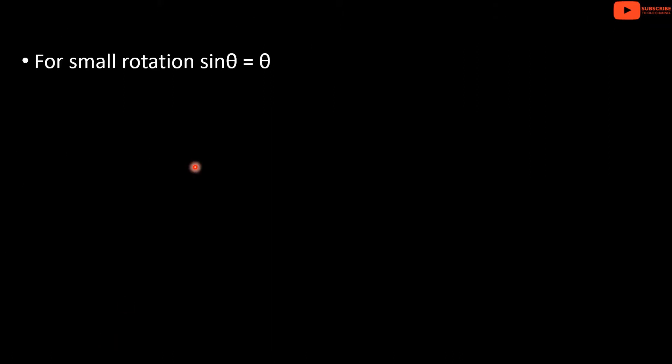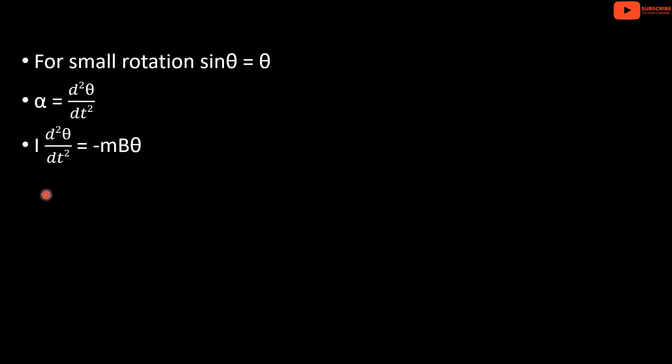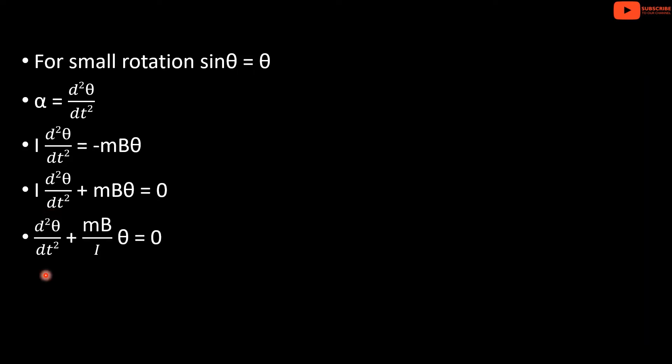For small rotation, sinθ ≈ θ. Here, α equals d²θ/dt², which is the angular acceleration. θ is the angular displacement, and ω equals dθ/dt is the angular velocity. Substituting, we get I(d²θ/dt²) equals minus MB·θ. Rearranging: I(d²θ/dt²) plus MB·θ equals 0, or d²θ/dt² plus (MB/I)·θ equals 0.